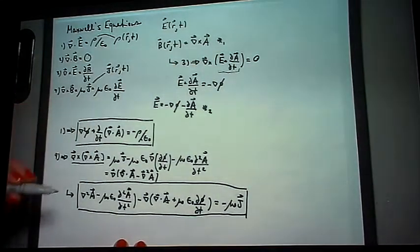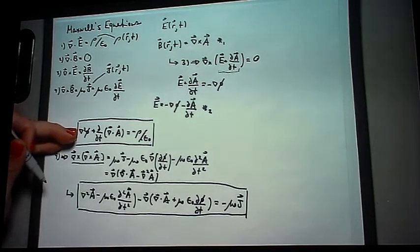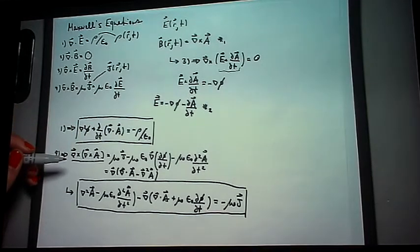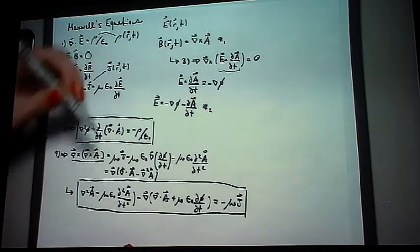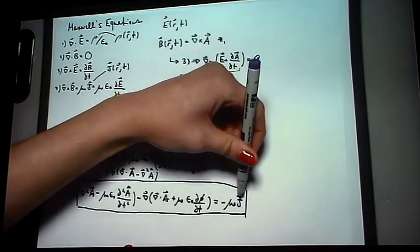These framed equations, this one and this one, contain all the information in Maxwell's equations, but are written solely in terms of the scalar and vector potentials, the charge, and the current.